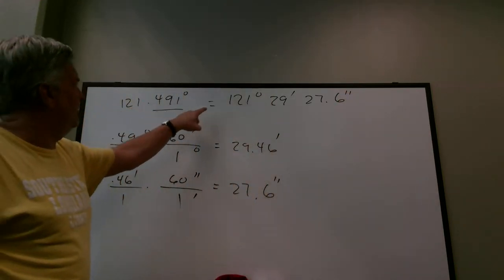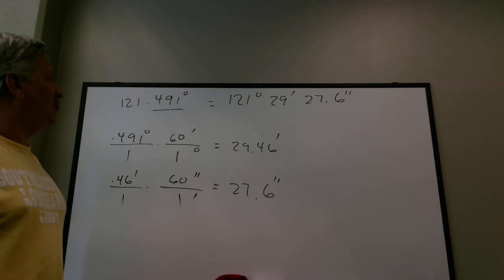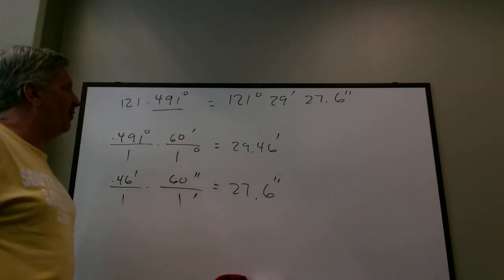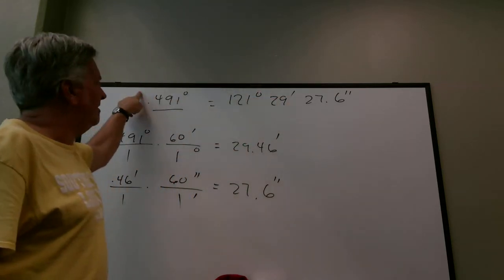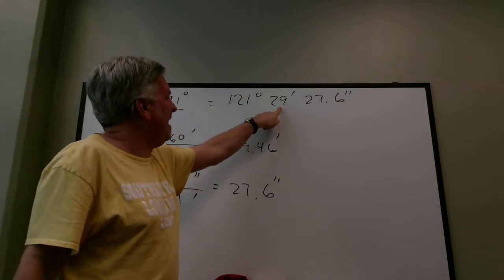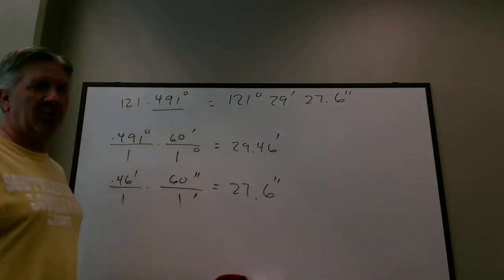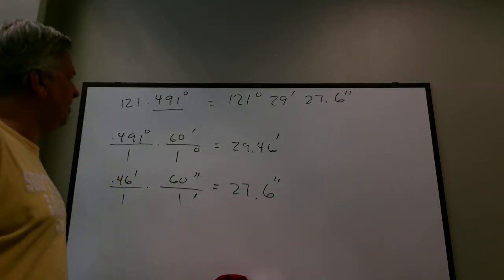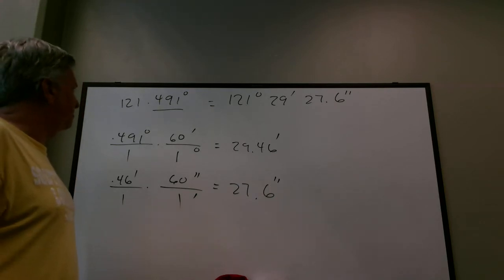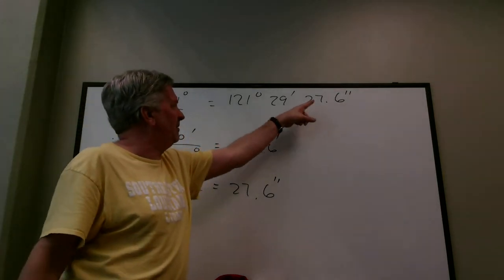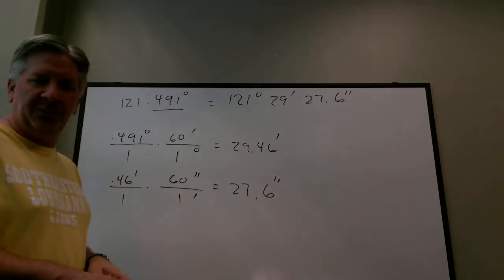So 121.491 degrees equals 121 degrees, 29 minutes, 27.6 seconds. To check your work, convert back using 121 plus 29 over 60 plus 27.6 over 3600 — you should get the original value. For those with the TI-84, I'll show you how to do these problems on the calculator at the end of this video.